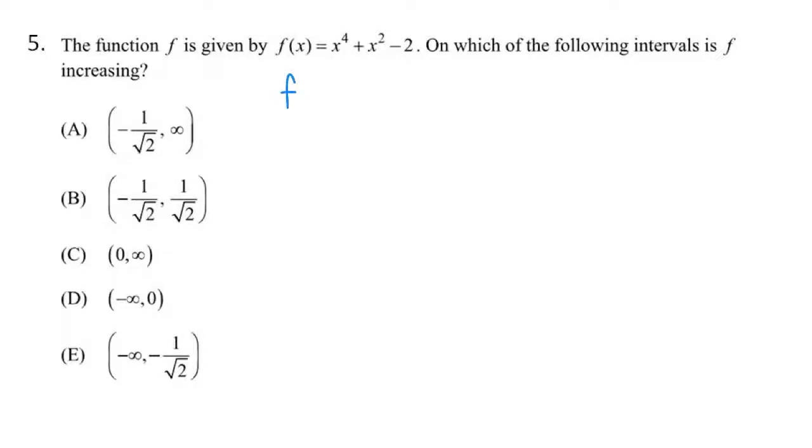So, let's look at f prime. That's going to be 4x cubed, isn't it? Plus 2x. We're going to set this equal to 0. So I have 4x cubed plus 2x. We're going to factor out a 2x, aren't we? What's left on the inside? 2x squared, plus 1.